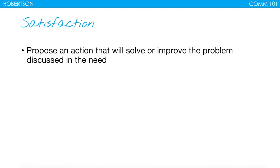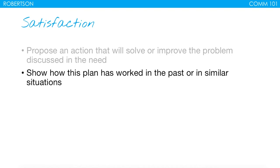In the satisfaction step, what you're trying to do is propose an action that will solve or improve the problem discussed in the need. This is essentially the plan — the thing you're going to do to solve that problem. If you're in one of my public speaking classes, I'd really recommend talking about one problem and one solution. When it gets complicated with multiple negative issues in the needs step, the plan has to address all of them and some get addressed better than others. Just look for one big problem, focus there, and focus your plan on exactly solving that need.